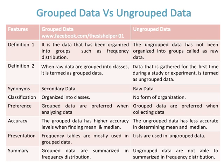Grouped data are organized into classes, while there is no form of organization in ungrouped data. Grouped data are preferred when analyzing data, while ungrouped data are preferred when collecting data. Grouped data has higher accuracy levels when finding mean and median, while ungrouped data is less accurate in determining mean and median.